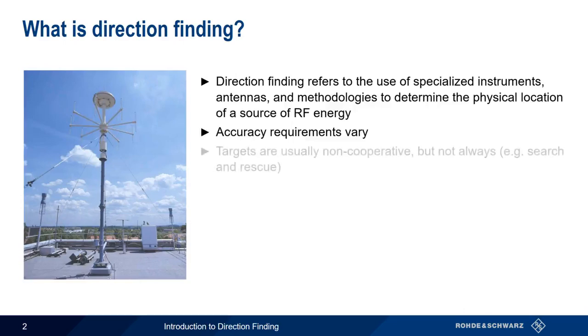Accuracy is important because in many cases direction finding targets are non-cooperative. Not only do they not want to be found, but they may take steps to hide their location or otherwise complicate the direction finding process. Before we get into the technical details of the different direction finding methodologies, let's spend a moment to define some additional terms that are often a source of confusion or even contention.